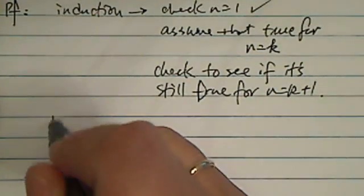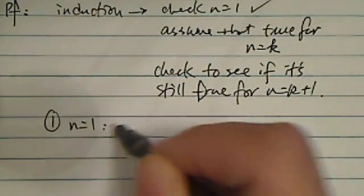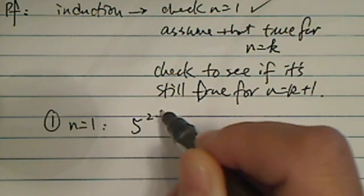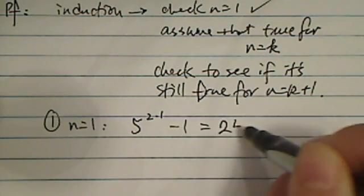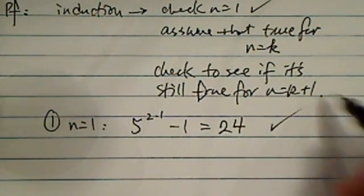Now, the first step is pretty easy. n equals 1 will have 5 to the 2 times 1 minus 1, that's 24. So it is a multiple of 8, so we'll check it.